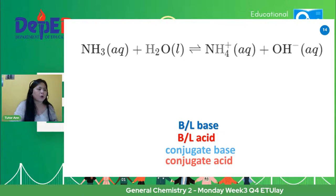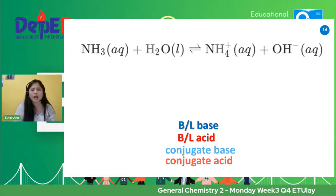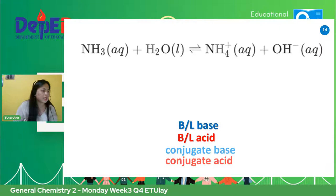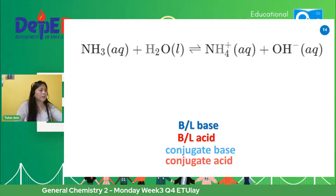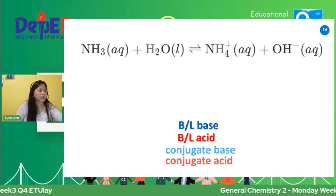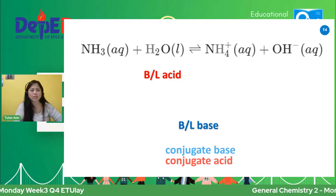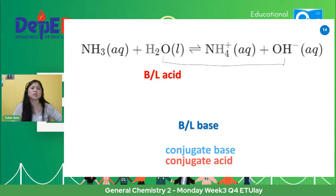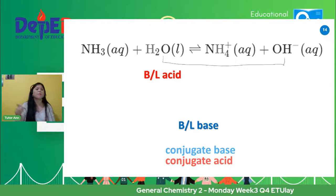So marami nagsabi si H2O — sabi ni Ruthly, ni Daniel, ni Franco, ni Sheena, ni Cyrus, ni Nelly, ni Jester, ni Ferdinand, ni Roxanne, ni Rob, Nody, Angela, Gian, Sonny. Sabi nyo ay water. Our Bronsted-Lowry acid is water. Kasi kung titignan nyo, sa reactant side si water naging OH. So ibig sabihin, nag-donate siya ng proton. The substance that is capable of donating is the Bronsted-Lowry acid.